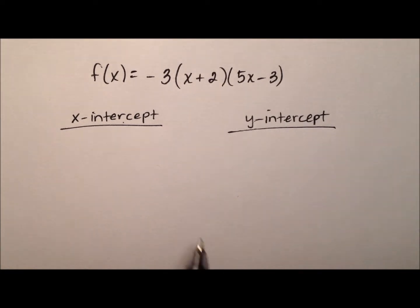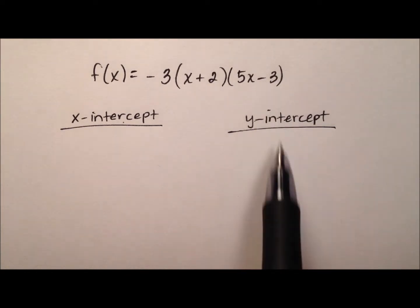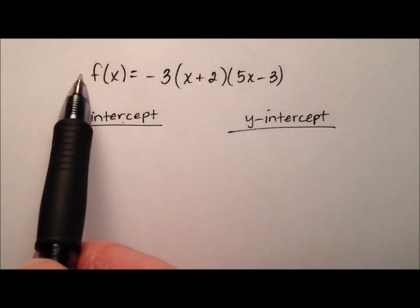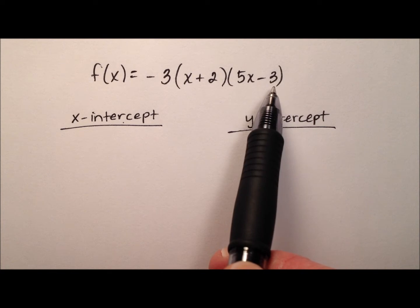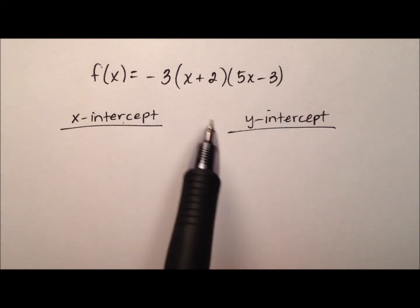Alright, so I have two columns here, one for finding the x-intercepts and one for finding that y-intercept. And remember, this is going to be a quadratic function, so its graph will be a parabola.